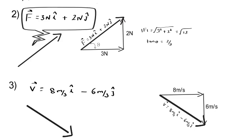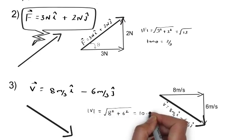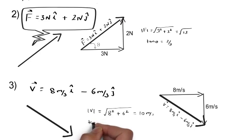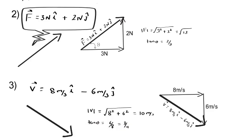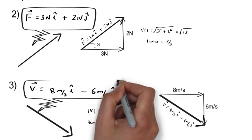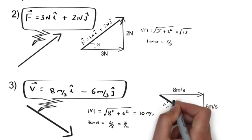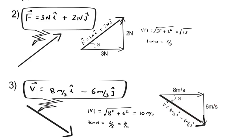This vector has its own magnitude and direction. The magnitude is √(8² + 6²) = 10 m/s from the Pythagorean theorem. The direction is found from tan θ = 6/8 = 3/4. Thus V = 8î − 6ĵ m/s has magnitude 10 m/s and makes an angle θ = tan⁻¹(3/4) with the X axis in the downward direction.